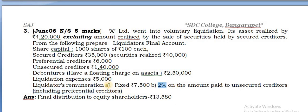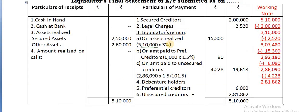This is 3 categories as in the previous problem - same type. Fixed remuneration as liquidation remuneration A, then B, amount paid to preferential creditors, then C, amount paid to unsecured creditors.